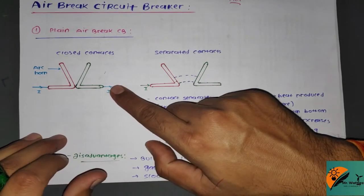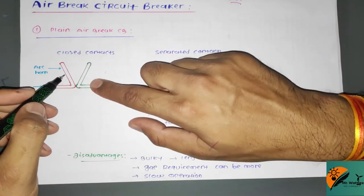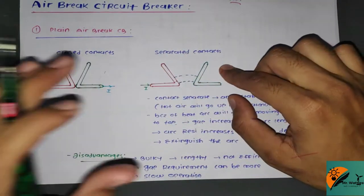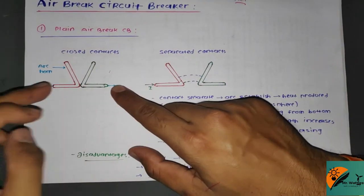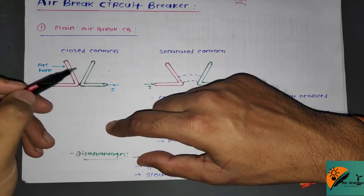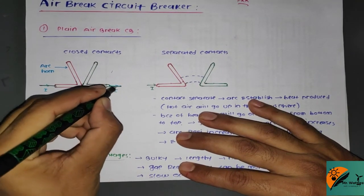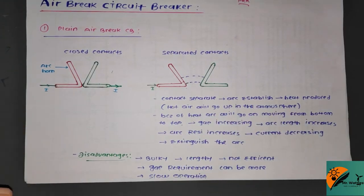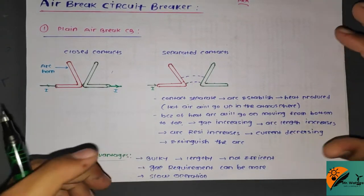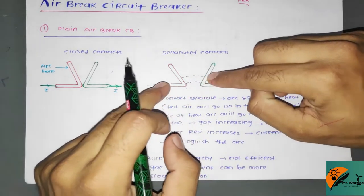Here we can see the horn type circuit breaker. Here are the contacts — these two contacts are in closed position. This is the arc horn, and then the arc horn will separate the two contacts. When connected, the circuit is closed; here is the incoming current and here is the outgoing current. But when you separate the contacts, an arc is produced — the circuit breaker contacts separate under fault conditions.